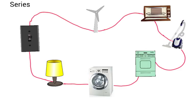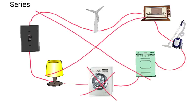So series circuits are not very useful. Also if one machine damages — so if this damages — the whole thing, nothing would work, everything else would also stop. So if your washing machine broke, everything else would stop working as well. So series circuits: no good.